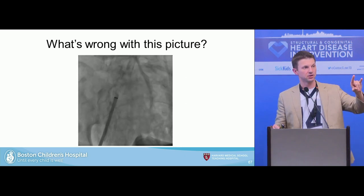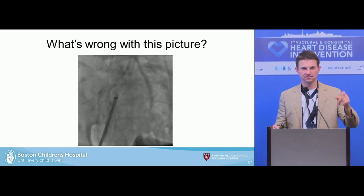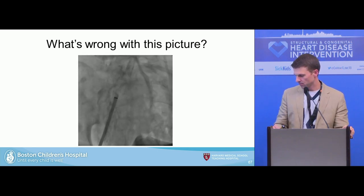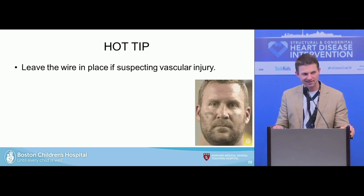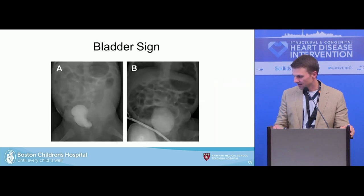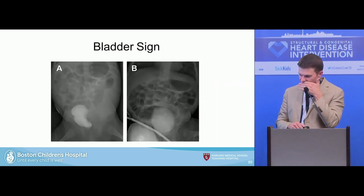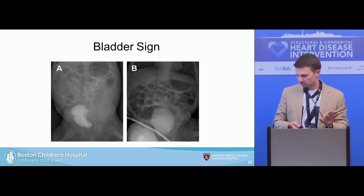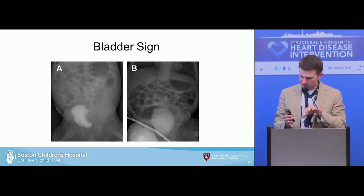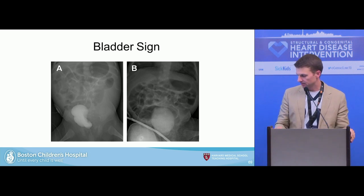There are two things wrong with this picture. The biggest mistake: if you're suspecting a vascular injury, leave the wire in place as you're pulling the sheath back and taking your picture. And lastly — our bladder sign: if you have a concern for arterial injury bleeding into the retroperitoneal space, take a look at the bladder full of contrast. It will be shifted if the bleeding is significant. That's what we saw in this patient.